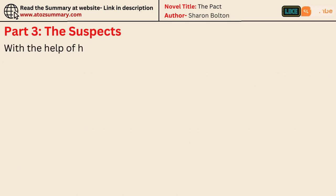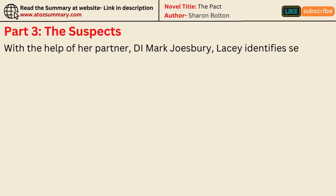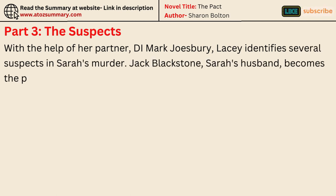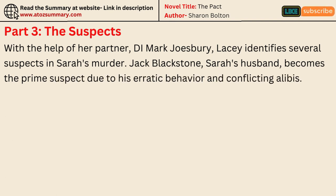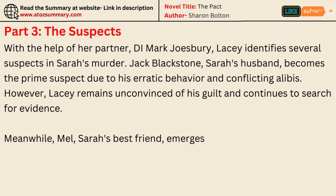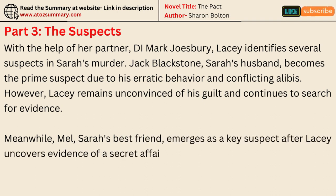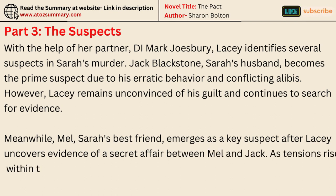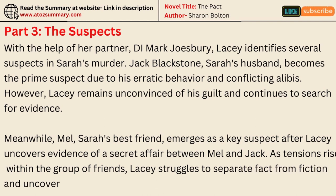With the help of her partner, D.I. Mark Josbury, Lacey identifies several suspects in Sarah's murder. Jack Blackstone, Sarah's husband, becomes the prime suspect due to his erratic behavior and conflicting alibis. However, Lacey remains unconvinced of his guilt and continues to search for evidence. Meanwhile, Mel, Sarah's best friend, emerges as a key suspect after Lacey uncovers evidence of a secret affair between Mel and Jack. As tensions rise within the group of friends, Lacey struggles to separate fact from fiction and uncover the truth.